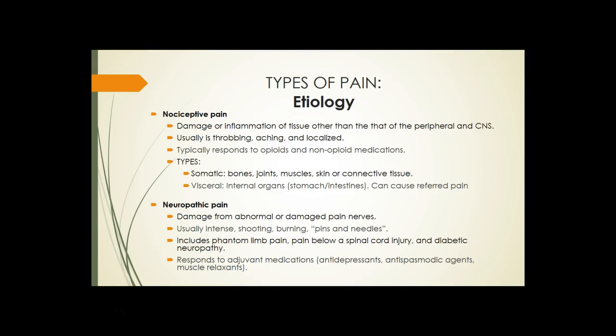Neuropathic pain is basically damage or abnormal functioning of nerves. Patients will describe this as shooting, burning, or pins and needles. It can include phantom limb pain, pain below a spinal cord injury, and diabetic neuropathy. It typically responds better to adjuvant medications like antidepressants, antispasmodic agents, and muscle relaxants.